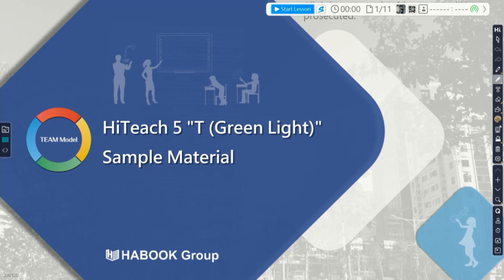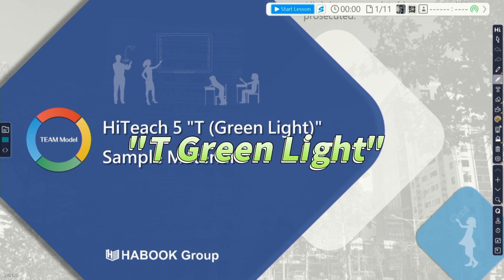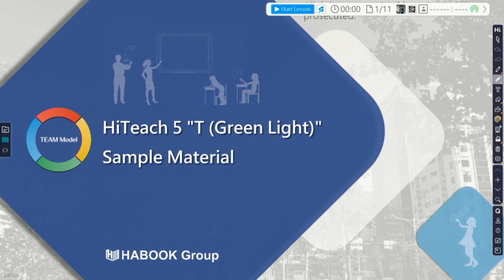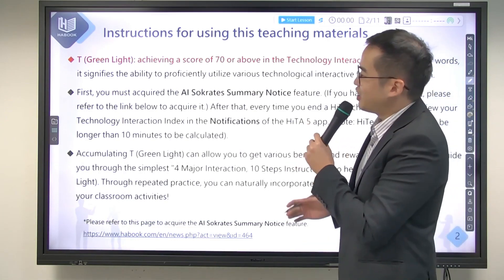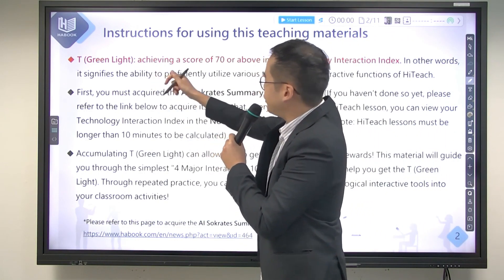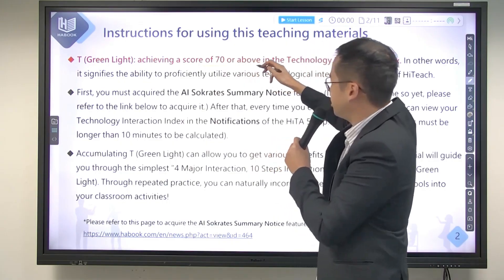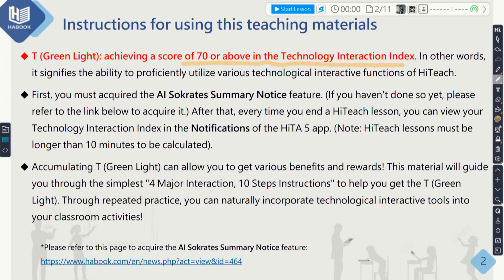Hello ladies and gentlemen, today we are going to teach you how to get a T Green Light in HiTeach 5. To get a T Green Light means you are achieving a score of 70 or above in the technology interaction index, which means you can use various kinds of technological functions of HiTeach.